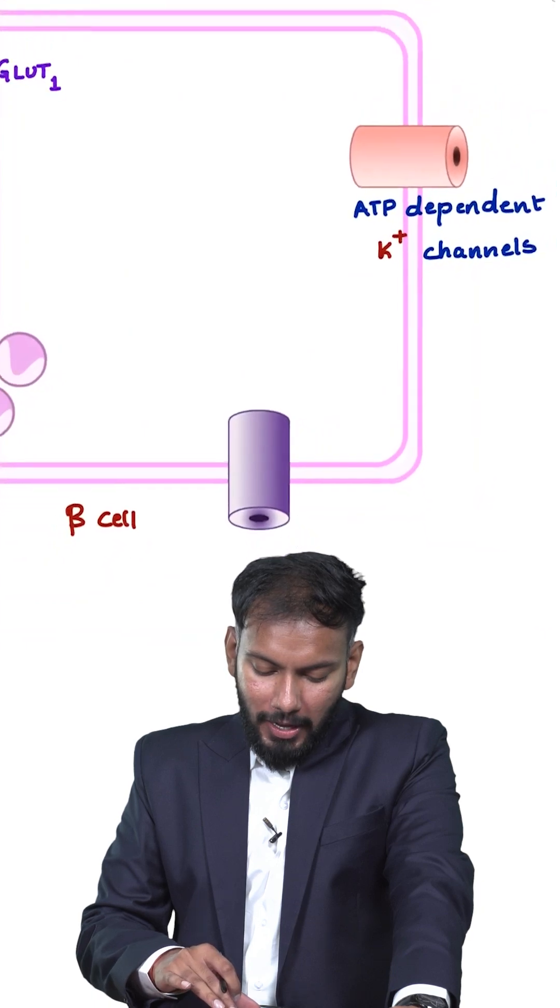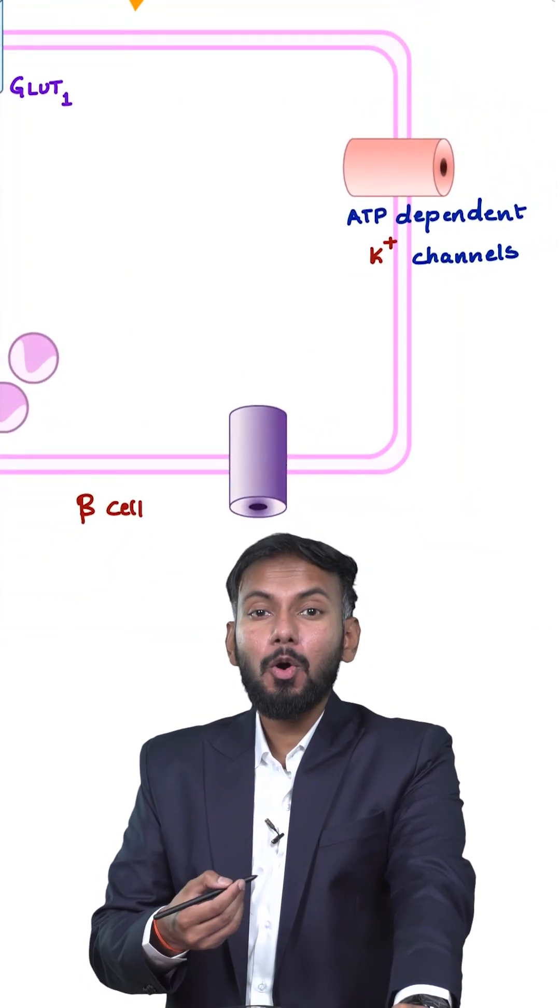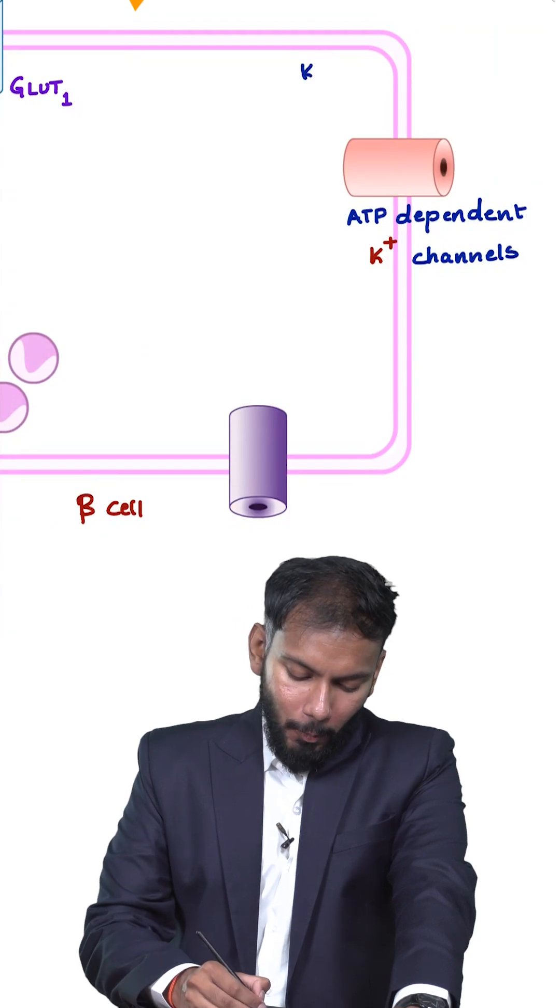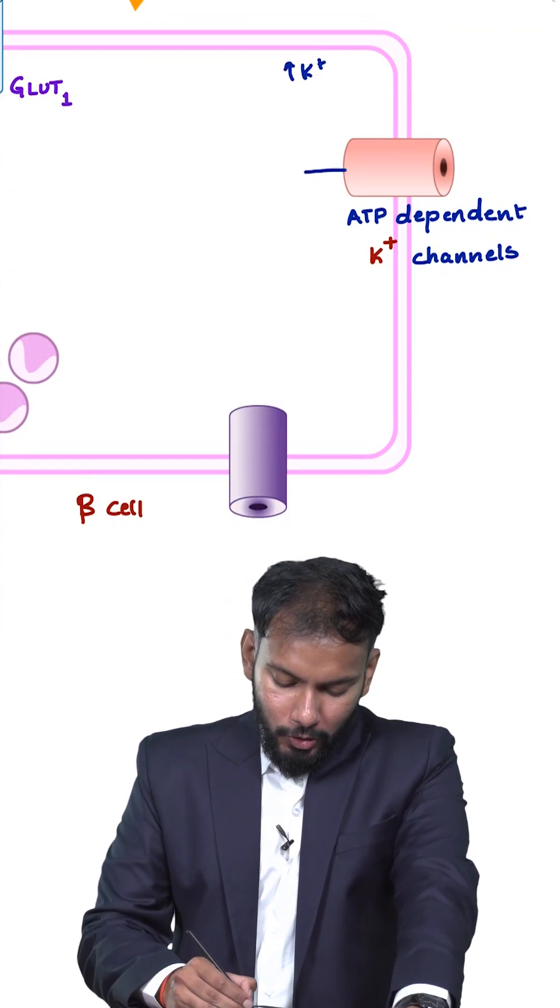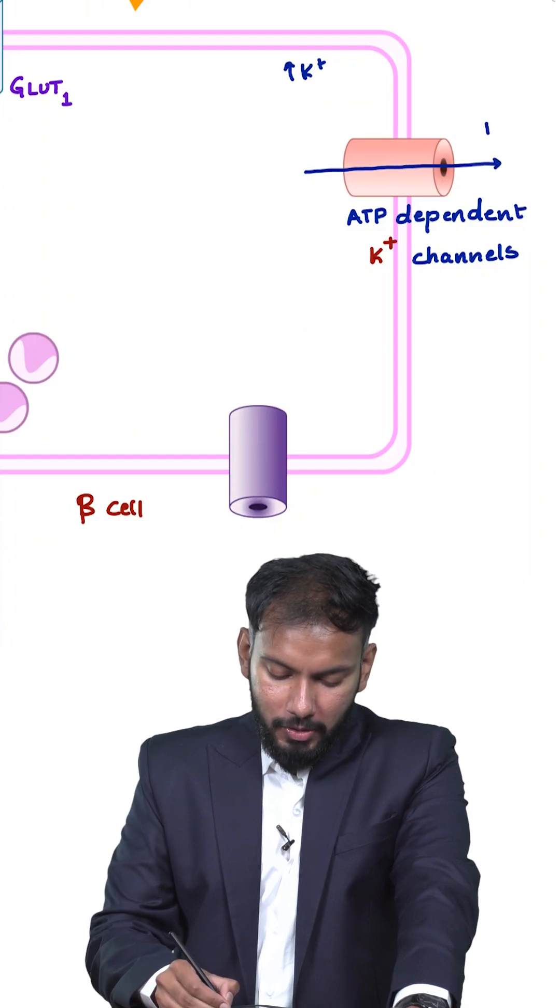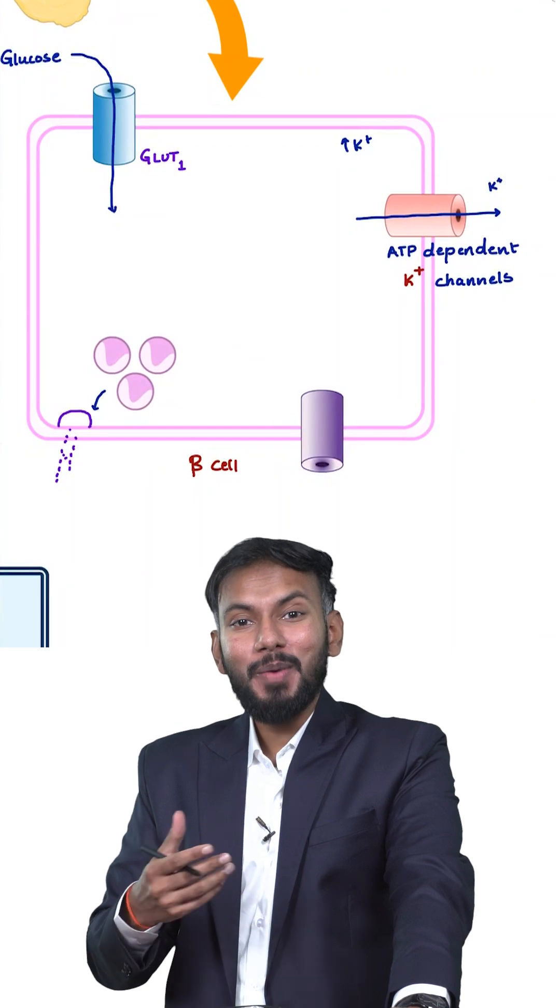Now my question is, is the potassium going outside or inside? Obviously it is going outside. Why? Because the potassium concentration is more inside the cell. So usually the potassium is going outside the cell. This is what usually happens in the beta cells of pancreas.